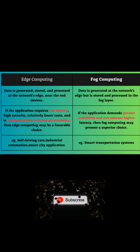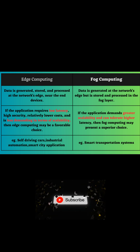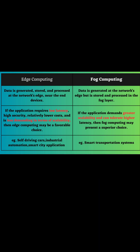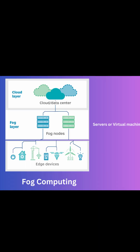In fog computing, data is generated at the edge of the network but stored and processed in the fog layer, which is a network of lightweight servers.